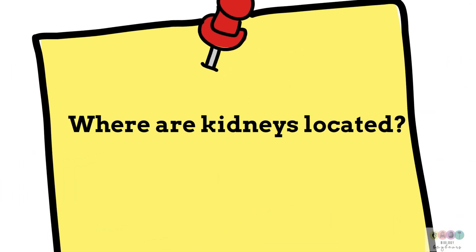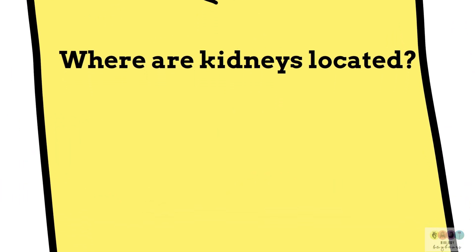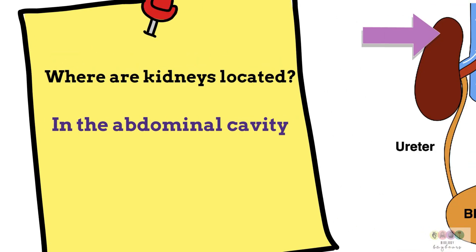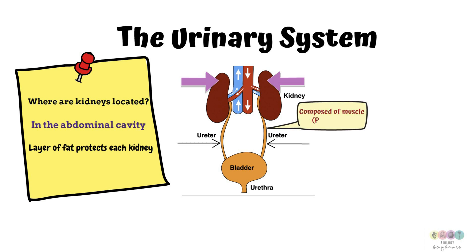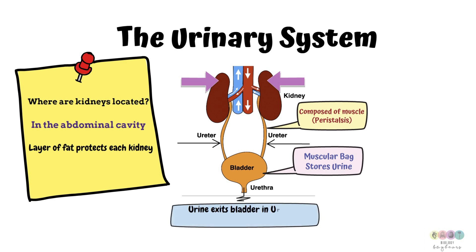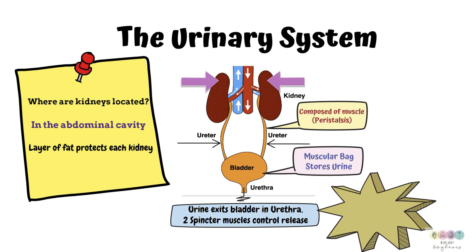The kidneys are located in the abdominal cavity and each kidney is protected by a layer of fat. Each kidney is linked to the bladder by a tube known as the ureter. It's composed of muscles so it can perform peristalsis, muscular contraction. The bladder is a muscular bag that stores urine, and when urine is ready to exit the body it leaves through the urethra, controlled by two sphincter muscles. Micturition is the release of urine.